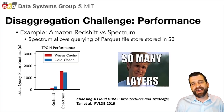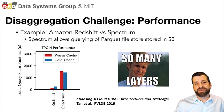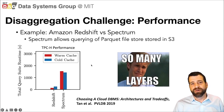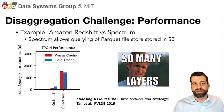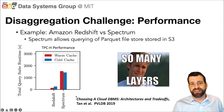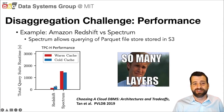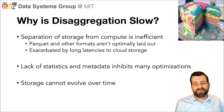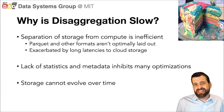The problem with this disaggregated design where we separate storage from query processing is really performance. For example, if you look at the Amazon Redshift system versus the Redshift Spectrum system — where Spectrum is able to query files as they live in S3, and Redshift is a more traditional monolithic design — you see that Redshift is about seven to eight times faster than Spectrum when running a traditional warehousing workload like TPC-H.